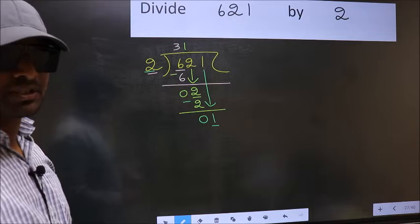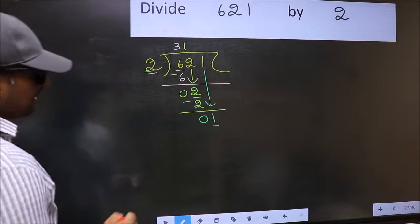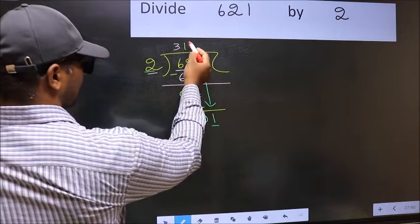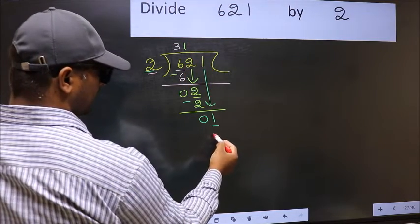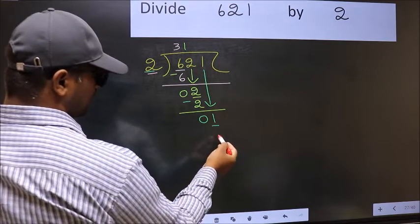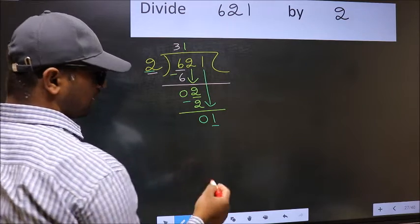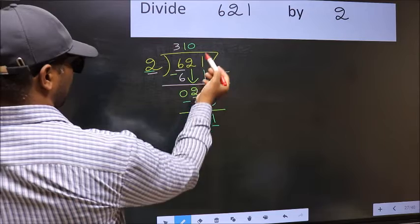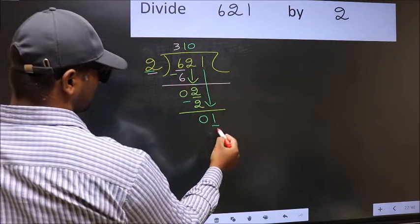Instead, what you should think of is, what number should we write here? If I take 1, I get 2 here. But 2 is larger than 1. So what we do is, we take 0 here. So 2 into 0, 0.